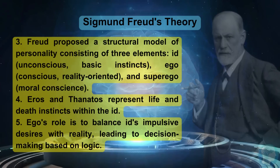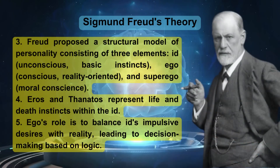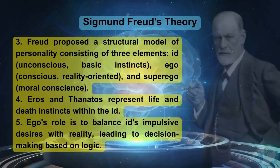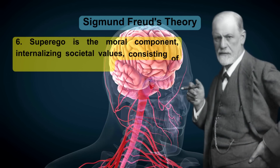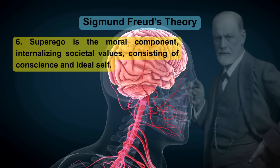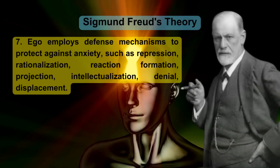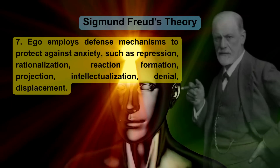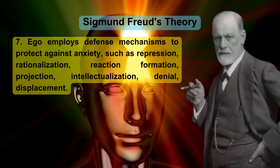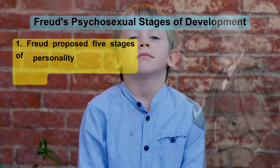Eros and Thanatos represent life and death instincts within the id. The ego's role is to balance the id's impulsive desires with reality, leading to decision-making based on logic. The superego is the moral component, internalizing societal values, consisting of conscience and ideal self. The ego employs defense mechanisms to protect against anxiety, such as repression, rationalization, reaction formation, projection, intellectualization, denial, and displacement.